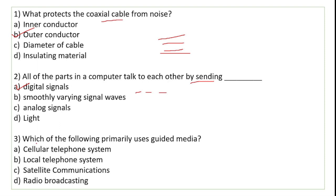Which of the following primarily uses guided media? Guided media kya hota hai — wires hote hain, cables hote hain. Cell phone guided media use nahi karta, wireless hai. Local telephone system jo wire se attached hota hai, woh guided media use karta hai. Satellite communication aur radio broadcasting wireless hain. So the correct answer is B — local telephone system.